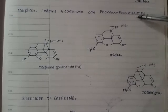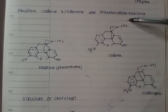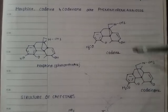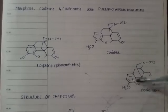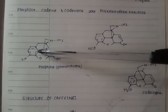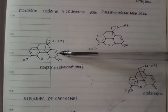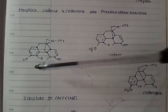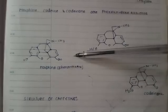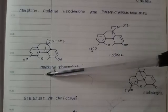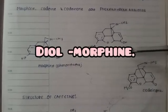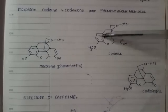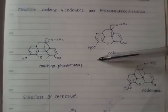These are the alkaloids of phenanthrene: morphine, codeine, and codeinone. If you observe this structure, this is the benzene ring here. Two alcohol groups — a di-alcohol — is nothing but morphine. When it comes to codeine, there is one OCH₃ group and the remaining structure is the same as morphine.